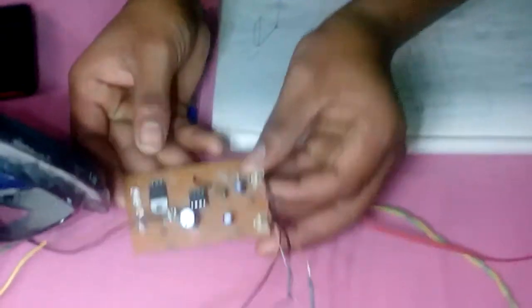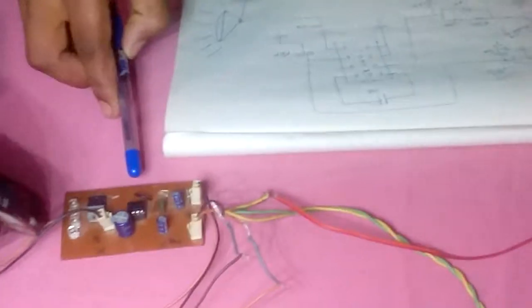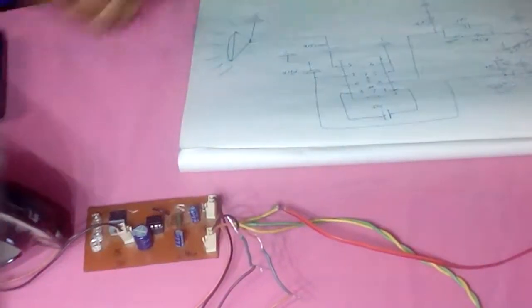This amplifier works according to the principle of transistors. So transistors can be divided into two categories: one is a switching circuit and one is an amplifier. This is called an amplifier. How this works and what are the operations for this amplifier, I want to explain here.